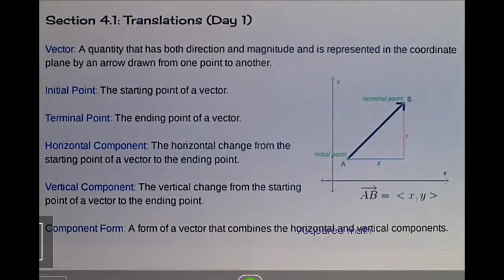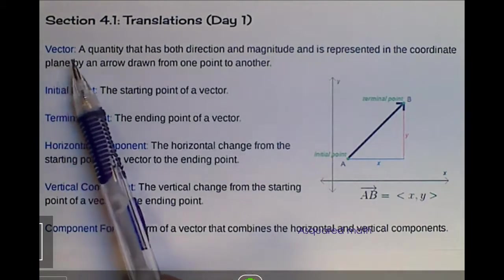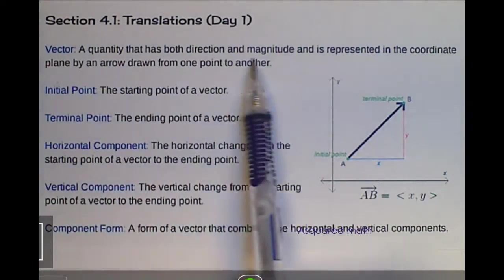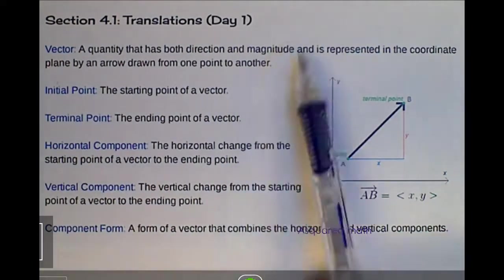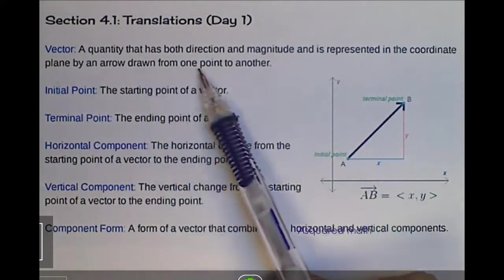In order to understand translations, we need to define quite a bit of terms here. So the first thing we're going to look at and define is a vector. A vector is a quantity that has both direction and magnitude and is represented in the coordinate plane by an arrow drawn from one point to another.